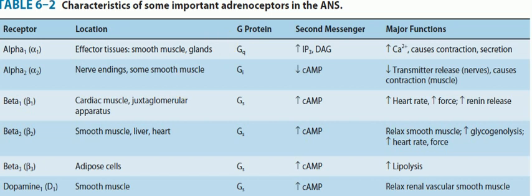The GQ protein is coupled to phospholipase C, which will cleave phosphatidylinositol bisphosphate into inositol triphosphate and diacylglycerol. These act as second messengers. Once activated, they raise calcium concentration, and this rise in calcium concentration causes contraction and secretion. So if you encounter a question talking about contraction and secretion in the context of adrenoreceptors, it means there is activation of alpha 1 adrenoreceptors.